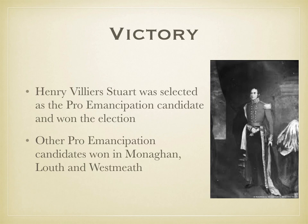However, with the support of O'Connell, Henry Villiers Stewart, a pro-Catholic emancipation candidate, was elected in Waterford over the wealthy landlord George Beresford. Other pro-Catholic emancipation candidates won elections in Monaghan, Louth, and Westmeath. Tenant farmers were evicted for their votes, but O'Connell and the Catholic Association used the Catholic Rent that had been collected to help those evicted farmers.